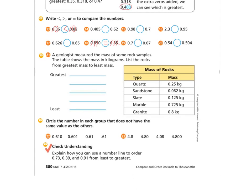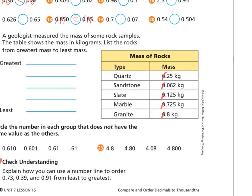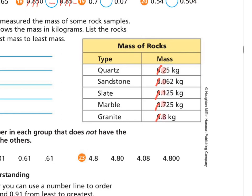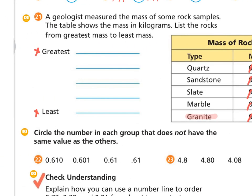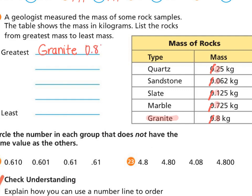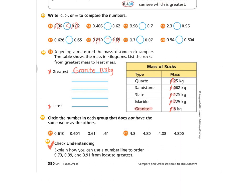Number twenty-one says a geologist — someone who studies rocks — measured the mass of some rock samples. The table shows the mass in kilograms; mass is like the weight. List the rocks from greatest mass to least mass. Looking just at the tenths spot: I've got two, zero, one, seven, and eight. The biggest is eight — that's granite — so I'm putting granite in my first greatest spot. Now cross that one off and take a few moments to finish ordering the rest from greatest to least.